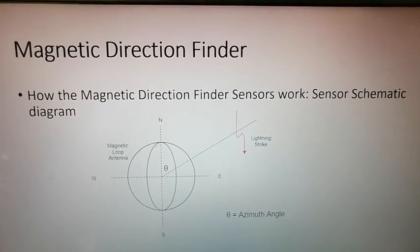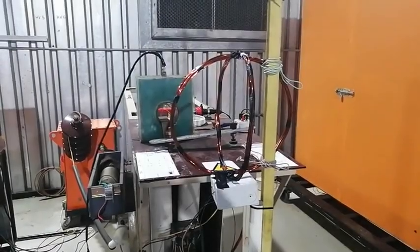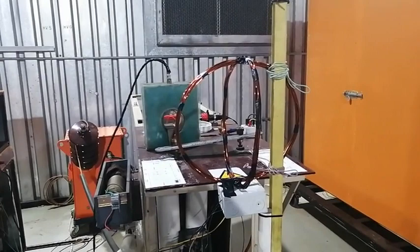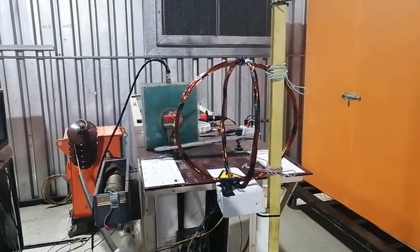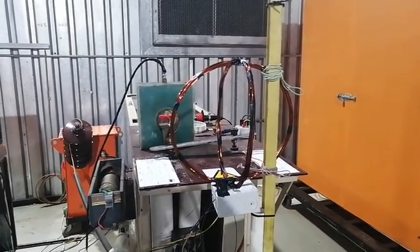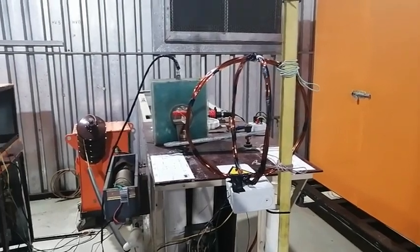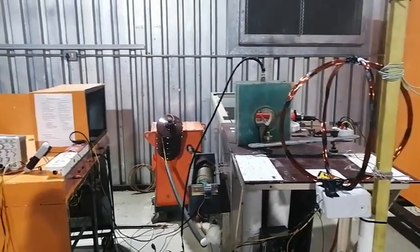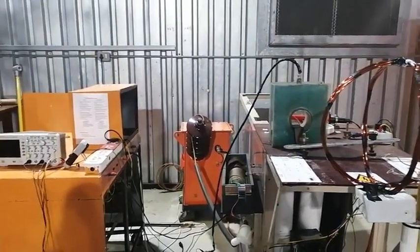This is a setup done at the high voltage laboratory to test the magnetic direction finder. The magnetic direction finder is placed at different locations with respect to the impulse current generator and measurements of the voltages across the loops are taken.